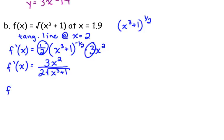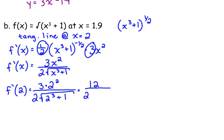Now let's plug in 2. 3 times 2 squared over 2 times 2 cubed plus 1 square root of 2 cubed plus 1. 2 squared is 4, 3 times 4 is 12. 2 cubed is 8, 8 plus 1 is 9. So 12 over 2 is 6, square root of 9 is 3, 6 over 3 is 2. The slope of our tangent line is 2. Are we okay with that?